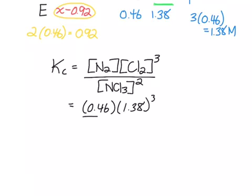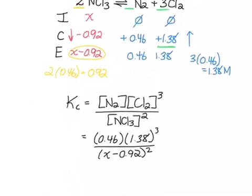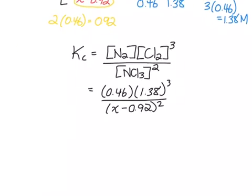Of chlorine we have 1.38, that's going to be cubed. And of nitrogen trichloride we have x minus 0.92, and that's going to be squared. And we know our Kc value. In our question we were told that our Kc value is 3.3 times 10 to the negative 2.